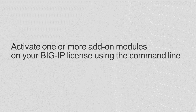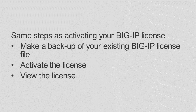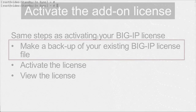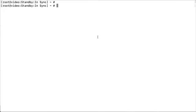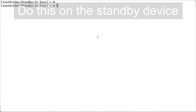Next, to activate one or more add-on modules on your BigIP license using the command line, follow the same steps used to activate your BigIP license. First, make a backup of your BigIP license file. Next, activate the license. Before you activate the license, remember that the system goes offline when you use the SOAP license client command. F5 recommends that you perform this procedure on the standby device if applicable.